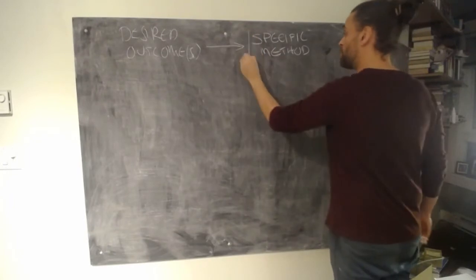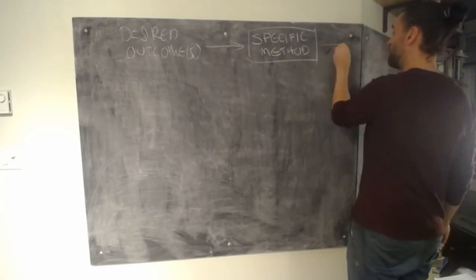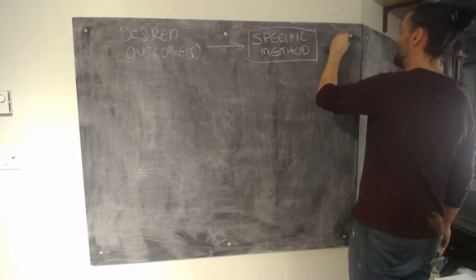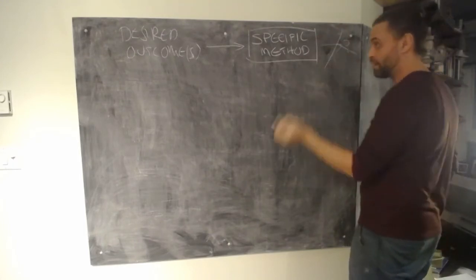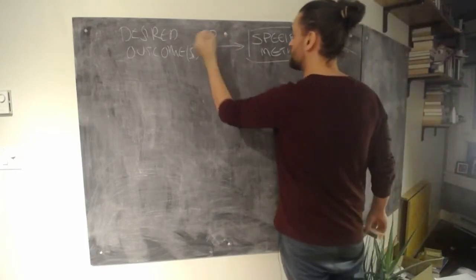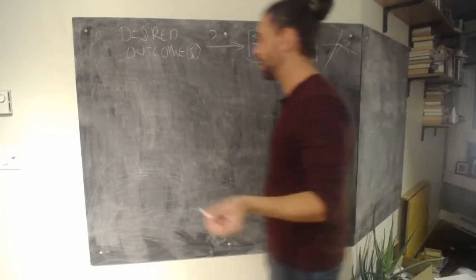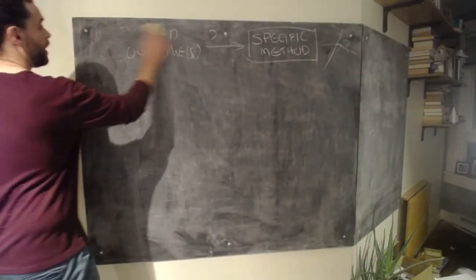And the job is to map the desired outcome to the specific method. And in software, once you've got this, you're done. There's no execution phase after this. It's done. So the question is, how do you do this part? And the answer, I think, for software goes kind of like...